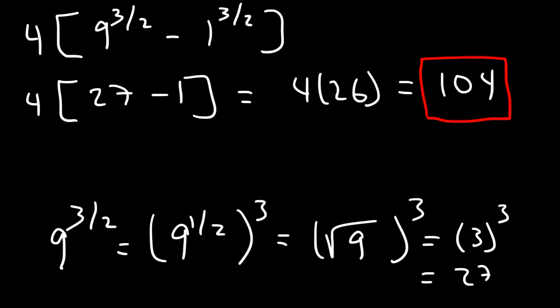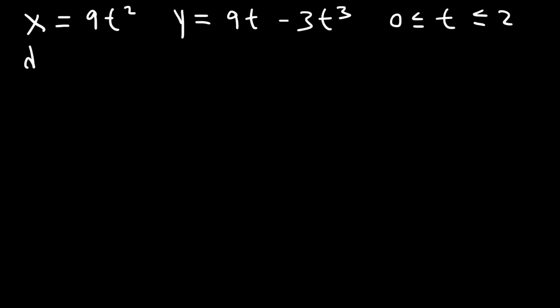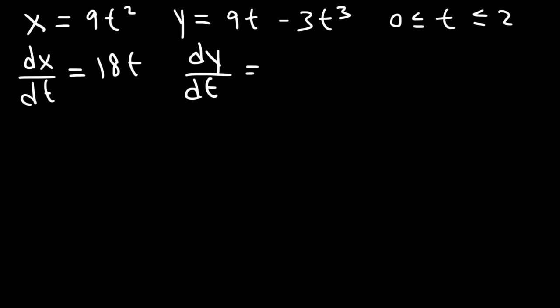So now let's work on another example. Let's say that x is equal to 9t squared, and y is equal to 9t minus 3t to the 3rd power. And let's say we want to find the length of the arc from 0 to 2. The first thing I'm going to do is calculate dx/dt, which is going to be 18t. And then dy/dt, which is 9 minus 9t squared.